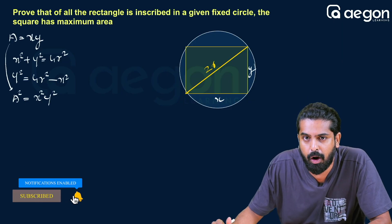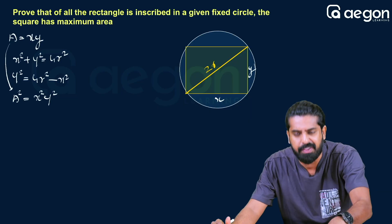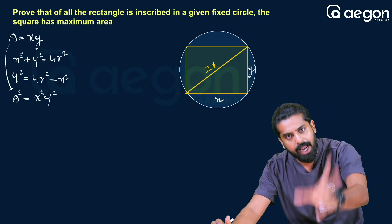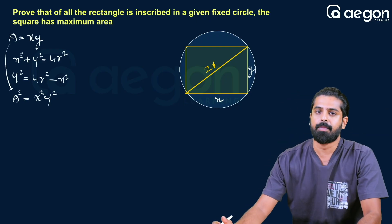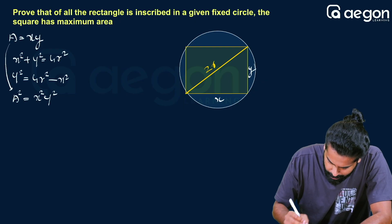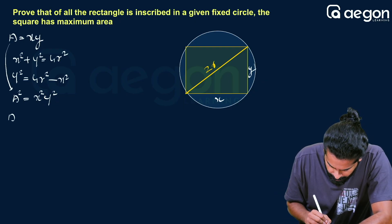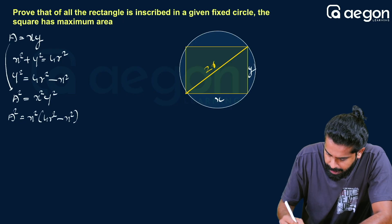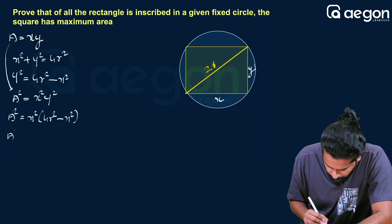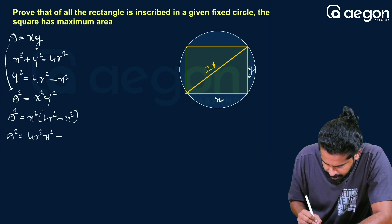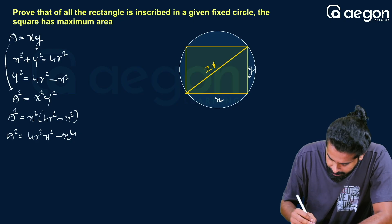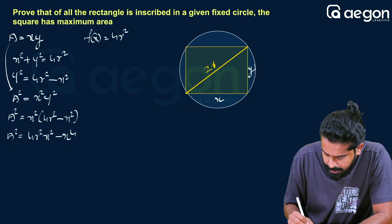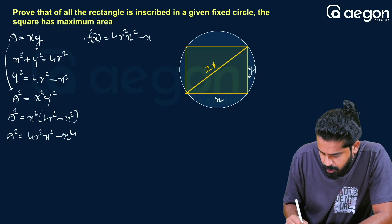Area squared maximum is the same point as area maximum. So we substitute: A² = x² × y² = x²(4r² − x²). Distributing, A² = 4r²x² − x⁴. We define f(x) = 4r²x² − x⁴. We have this function to work with.